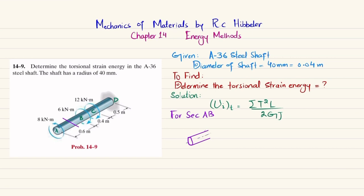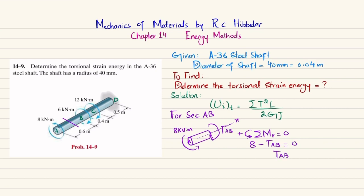At the end we have a counterclockwise torque of 8 kilonewton·meter. To balance it, there will be a clockwise torque equal to TAB. Using the equation of equilibrium — sum of all torques about the x-axis equals zero — and taking counterclockwise as positive: 8 minus TAB equals 0, so TAB equals 8 kilonewton·meter. This is the torque generated in section AB.